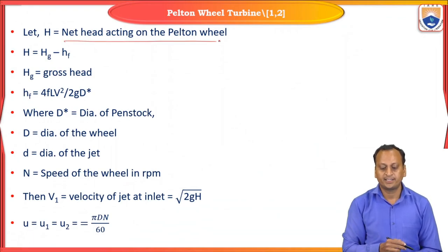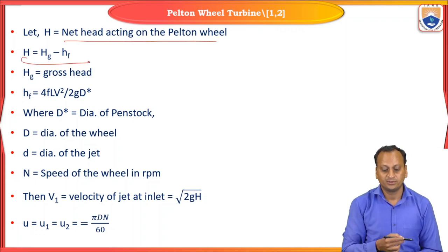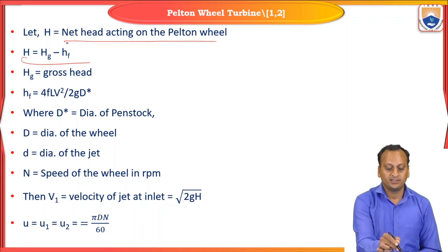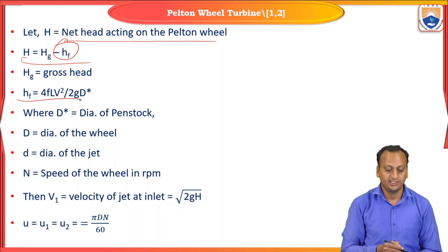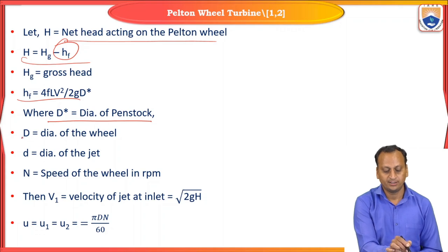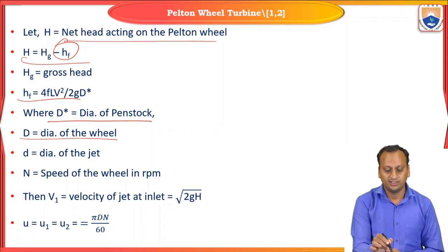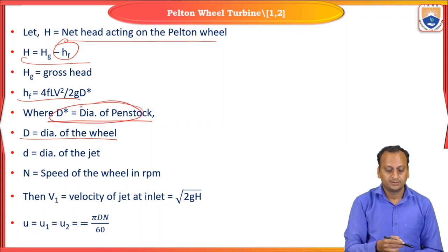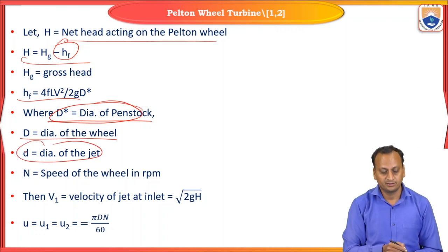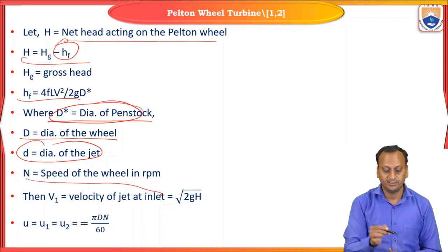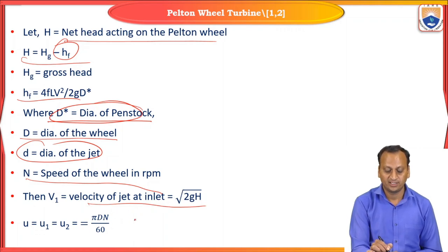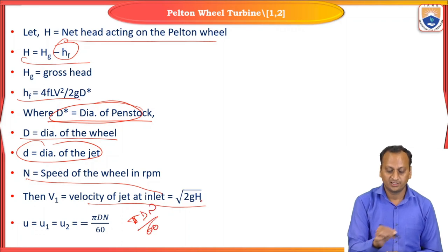H equals the net head acting on a Pelton wheel: H = Hg − Hf, where Hg is the gross head and Hf is the head loss due to friction. Hf = 4fLV²/(2gd), where d is the diameter of the penstock. d is the diameter of the jet striking the rotor. N is the speed of the wheel in rpm. V1 = √(2gH), and blade velocity U1 = U2 = πDN/60.